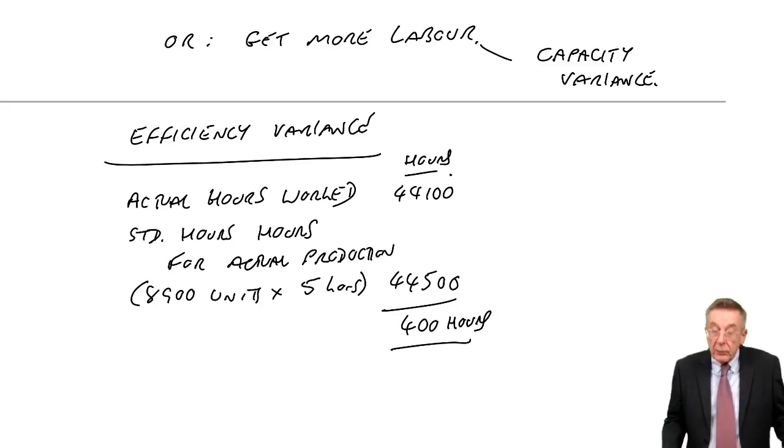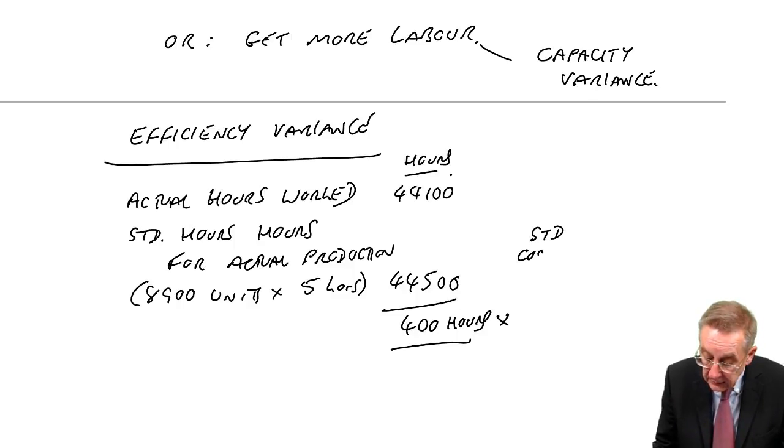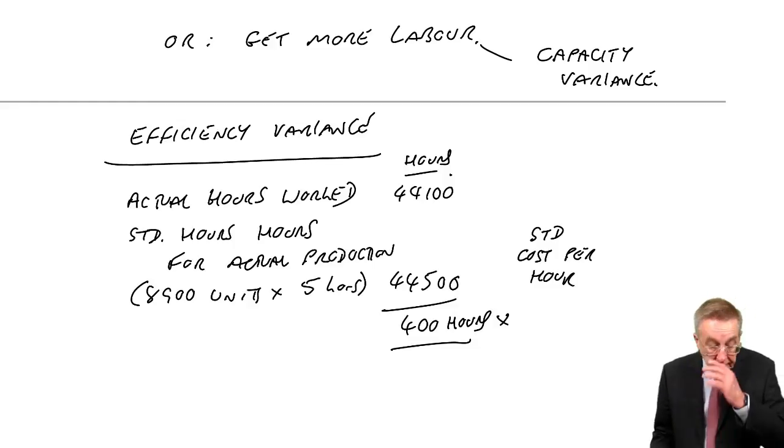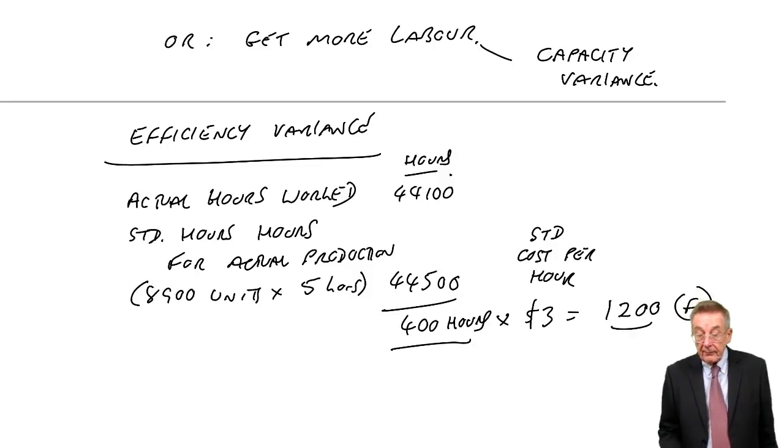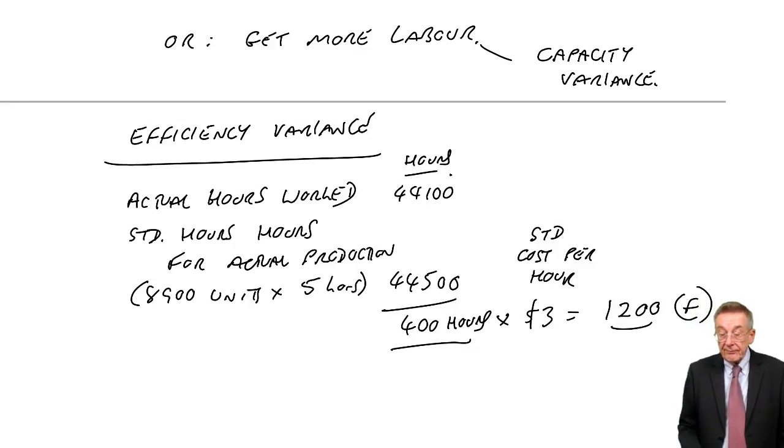We'd saved 400 hours and that saved us at $2 an hour. Well, for fixed overheads, they've worked 400 hours faster. That saves us at the standard cost per hour. The standard cost per hour for fixed overheads is $3. That saves us $1,200. It's favourable. Alright, that's the efficiency.